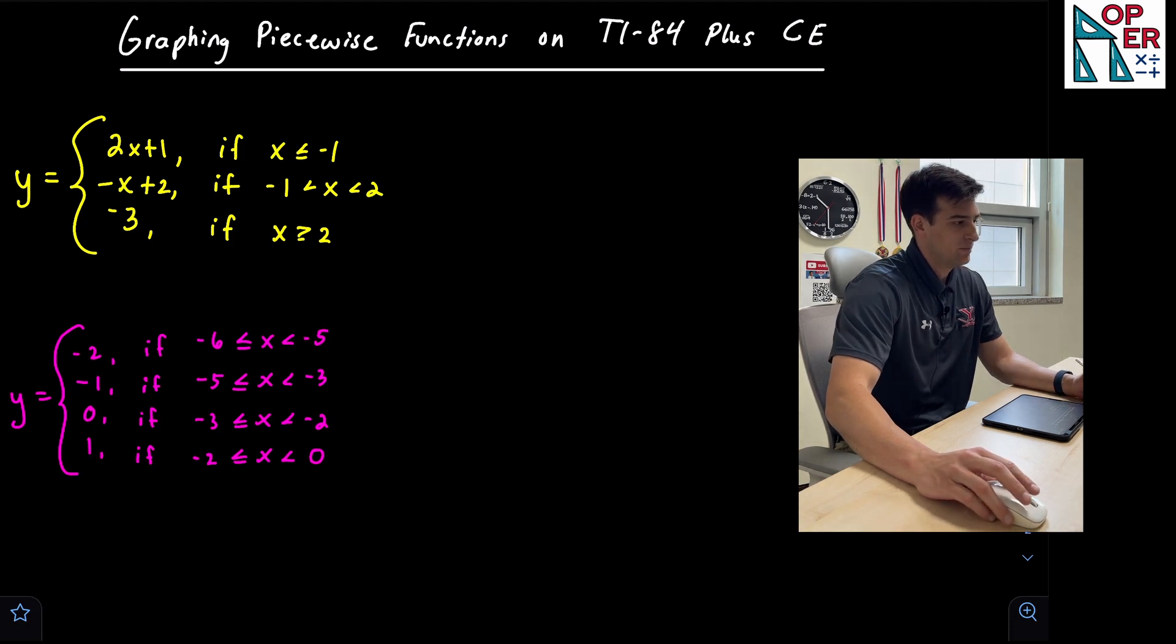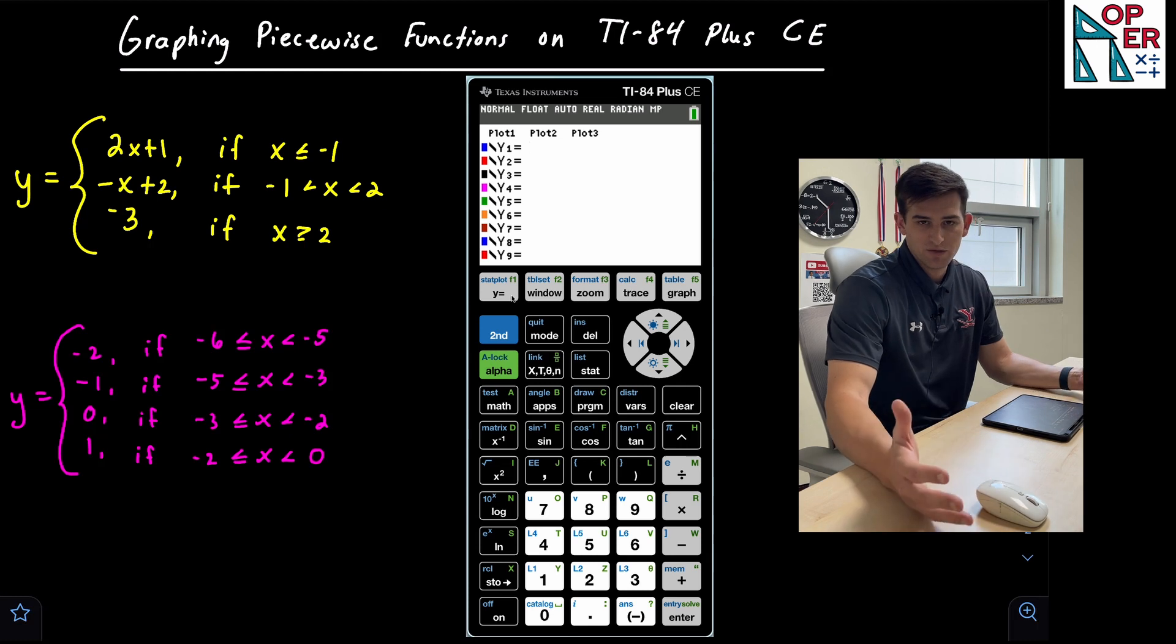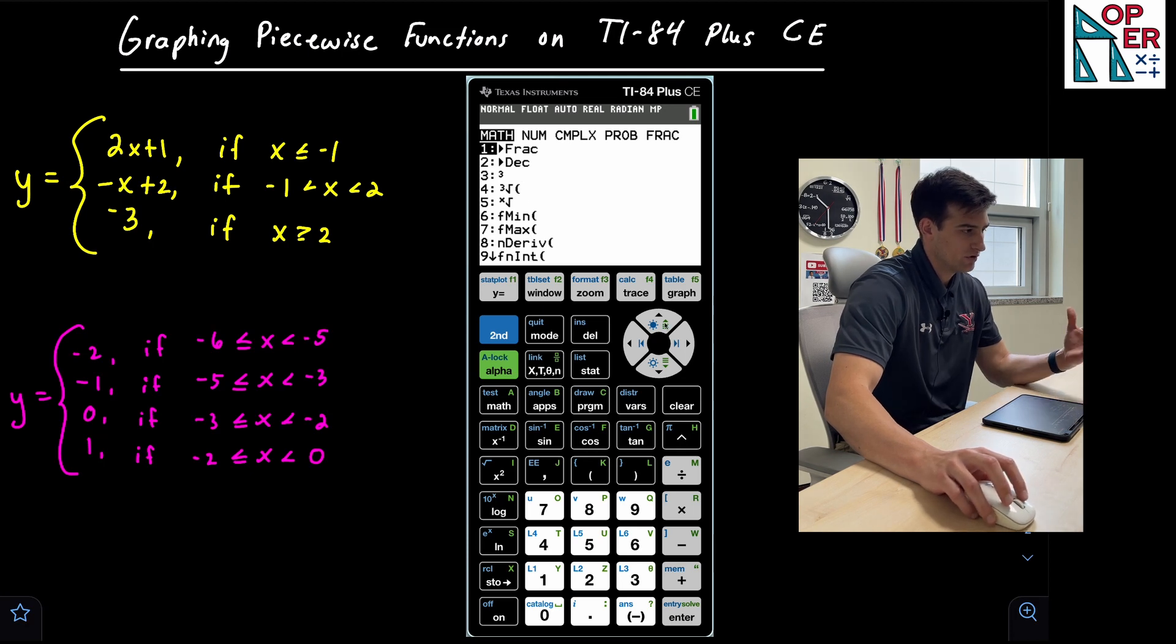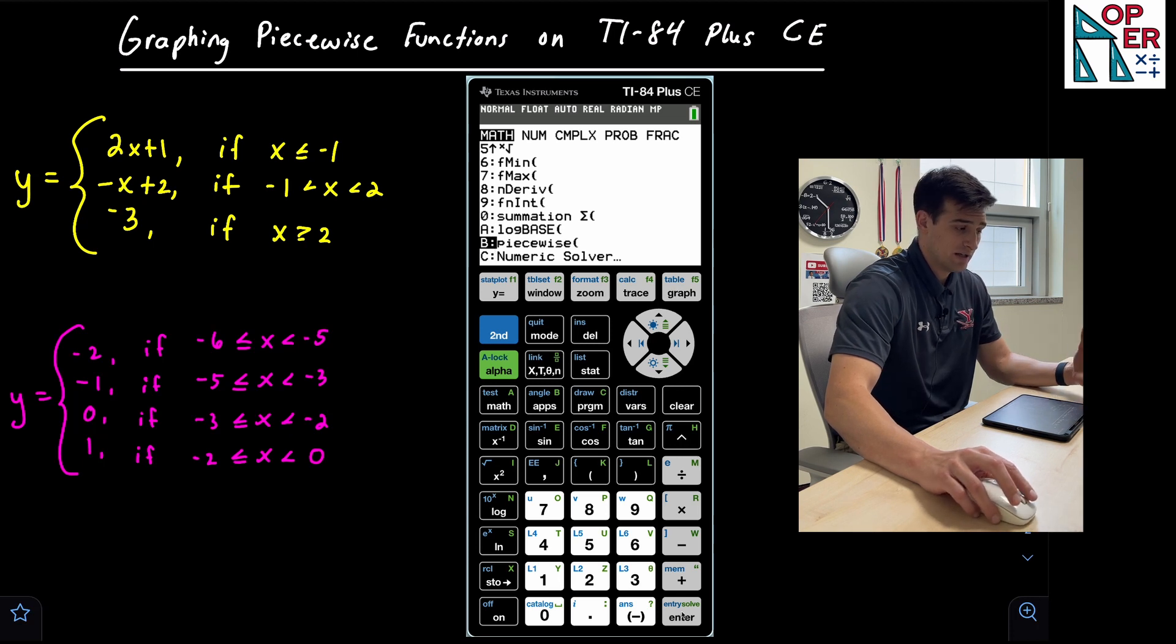So let's bring the calculator up onto the screen. The first thing we're gonna do is hit Y equals because that's the button we click to graph functions. And now we wanna click on the math button. So now we're gonna scroll down or you could scroll up because piecewise is located near the bottom. And option B here is piecewise. We're gonna go ahead and hit enter on that.